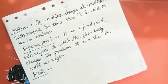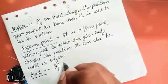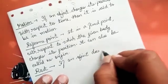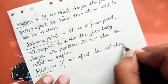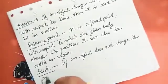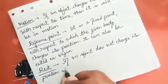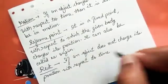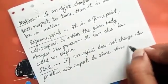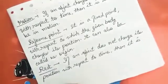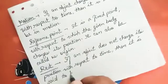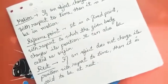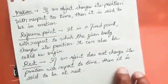So to define rest, I would say if an object does not change its position with respect to time, then it is said to be at rest. All those objects which do not change their position with respect to time are said to be at rest.